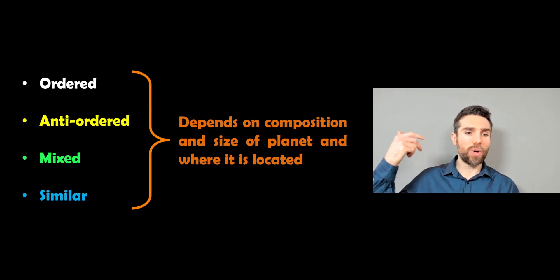The four ones you've got there—ordered, anti-ordered, mixed, and similar—will fall into one of those classes depending on the composition, the size of the planet, so what's its internal density and structure like, and also where it's located in the system. Is it close to the star, is it a long way off, are they bunched up together? It depends on their composition, their sizes, and also how they're arranged in the system itself.